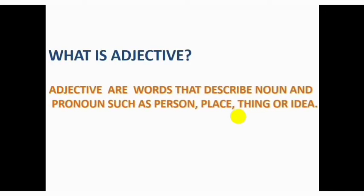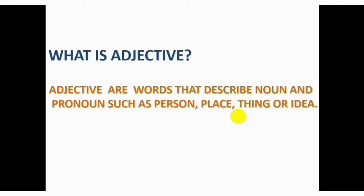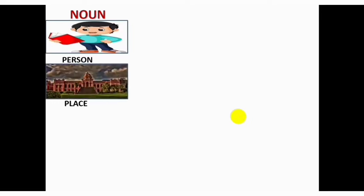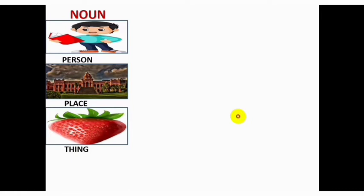What is adjective? Adjectives are words that describe noun and pronoun such as person, place, thing or idea. So, what is noun? Noun is a word which tells us about person, place, thing or idea and adjective describes that noun.